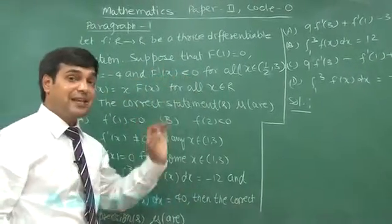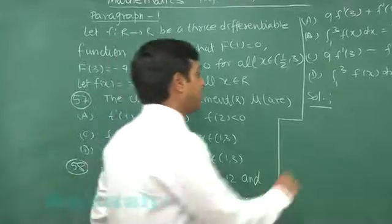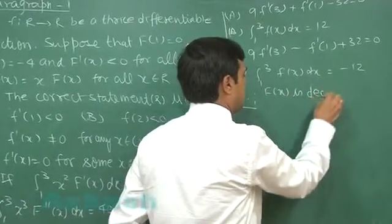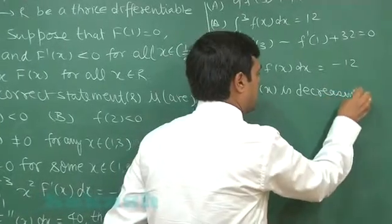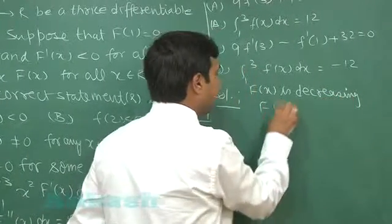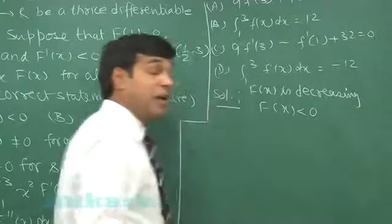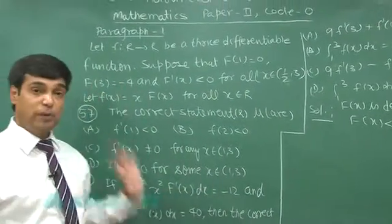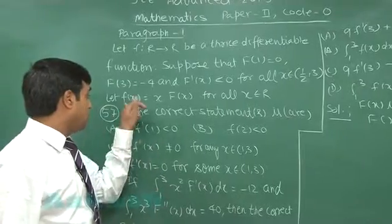So we can solve it as capital F dash x is negative means F(x) is decreasing function. Also we can see that F(x) is negative as F(1) is given to me 0, F of 3 is given to me minus 4.